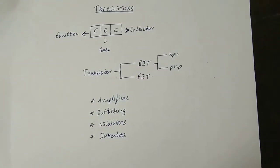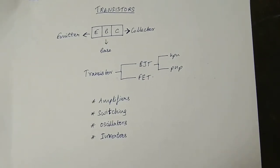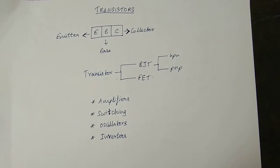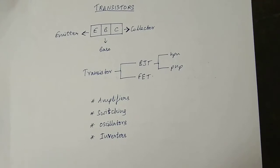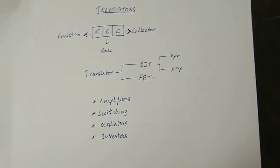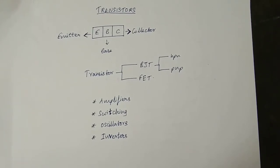Hi friends! Let's talk about transistors. Transistors are basically 3 terminal devices. The three terminals are: Emitter, Base, and Collector.